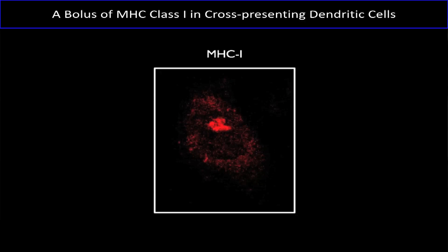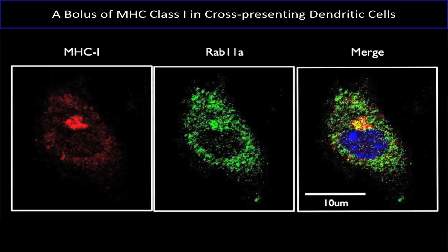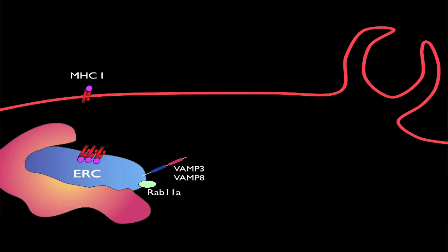We were then curious about where these MHC class 1 molecules were coming from. We discovered that MHC class 1 molecules were concentrated in an endosomal recycling compartment, or ERC for short, marked by the small GTPase Rab-11a, and the snare proteins VAM3 and VAM8. We discovered that dendritic cells with the capacity to cross-present express high levels of Rab-11a, the activity of which stocks the ERC with large reserves of MHC class 1 molecules.